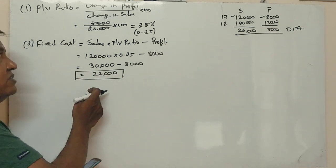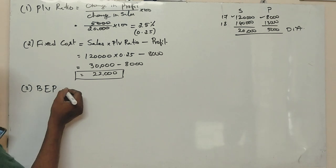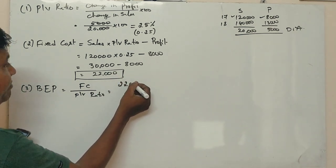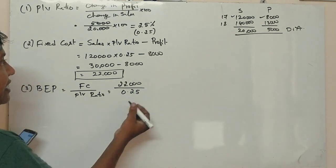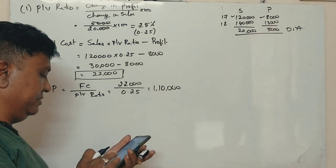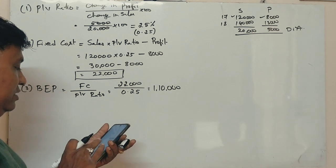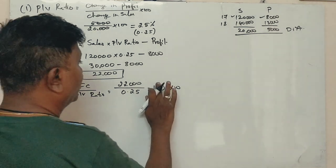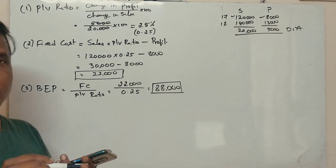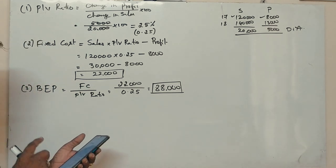Fixed cost divided by PV ratio. Fixed cost is 22,000 and PV ratio is 0.25, so you get 88,000 rupees. 22,000 divided by 0.25 is 88,000 rupees. So break-even point is 88,000 rupees. That is the answer to the second question.